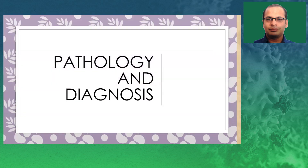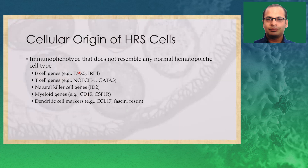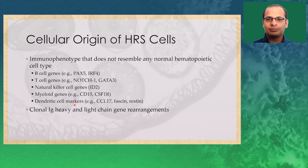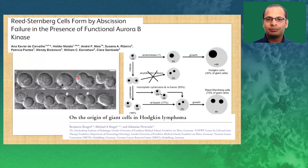Let's go into the pathology and diagnosis of the disease. Looking at cellular origin, the Hodgkin lymphoma cell — the Reed-Sternberg cell — does not resemble any normal hematopoietic cell type. There are antigens or genes from B cells, some from T cells, NK, myeloid, and dendritic cells. But clonally, we see immunoglobulin heavy and light chain rearrangement, so they derive from pre-apoptotic germinal center B cells. It is important to remember these are B cells in origin. However, they are formed by abscission failure in the presence of functional Aurora B kinase — that is, incomplete cytokinesis occurs, leading to formation of Reed-Sternberg cells.